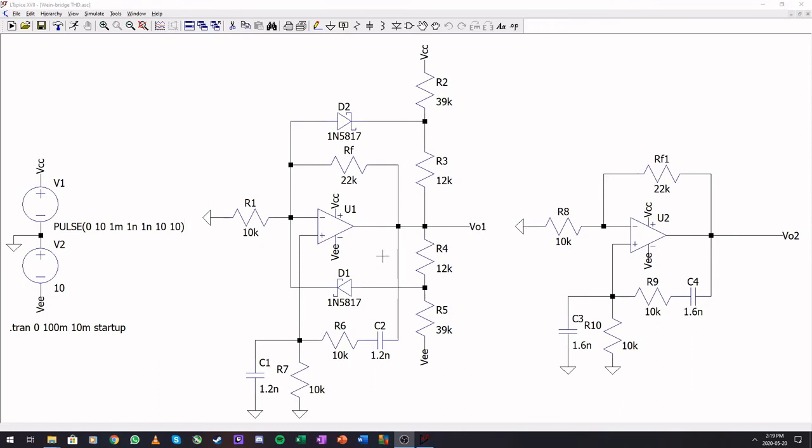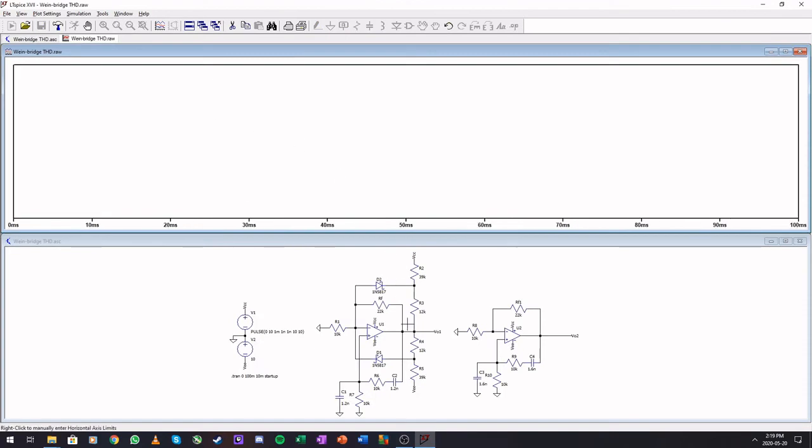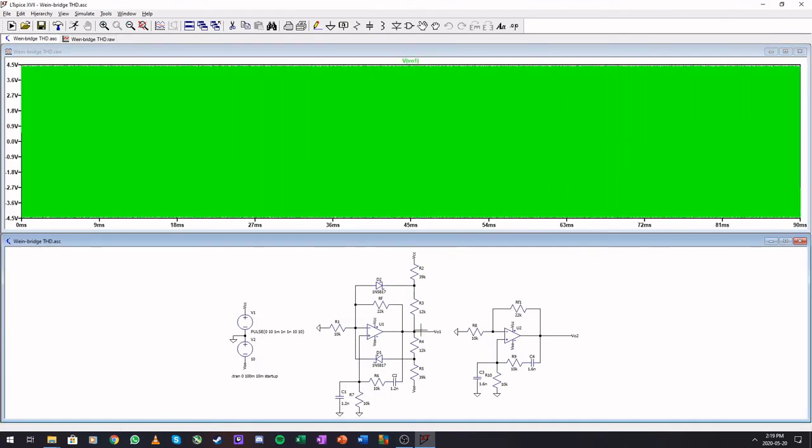I have my two Wien-bridge oscillators here back to back. For good FFT you need to run the signal for quite a while. Make sure you have a lot of data. Let's run this.